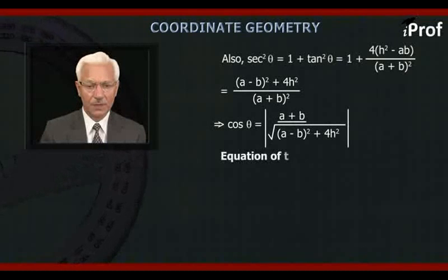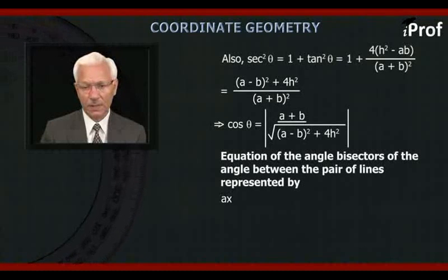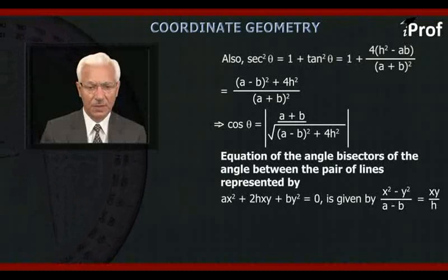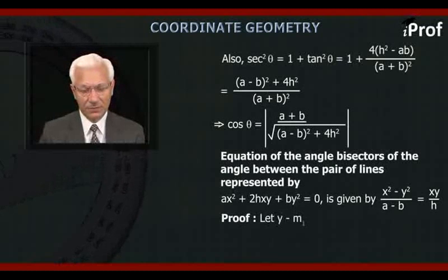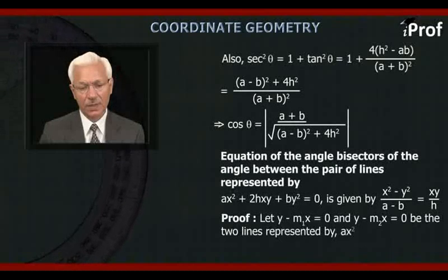For the equation of the angle bisectors of the pair of lines represented by ax² + 2hxy + by² = 0, let y − m₁x = 0 and y − m₂x = 0 be the two lines represented by ax² + 2hxy + by² = 0.